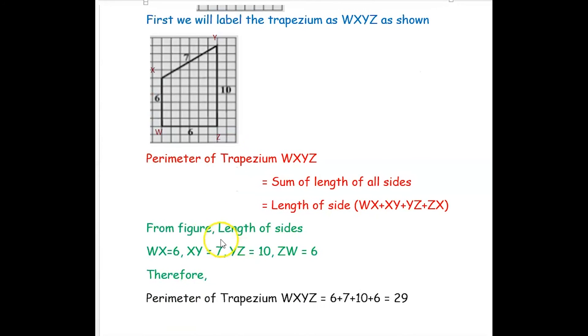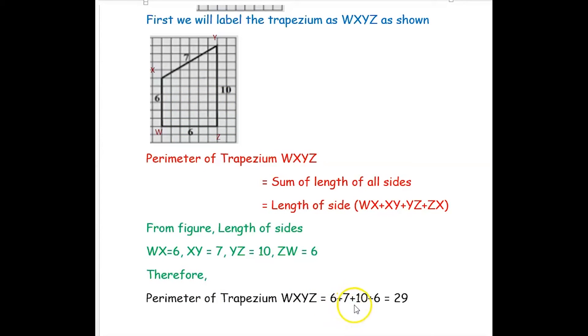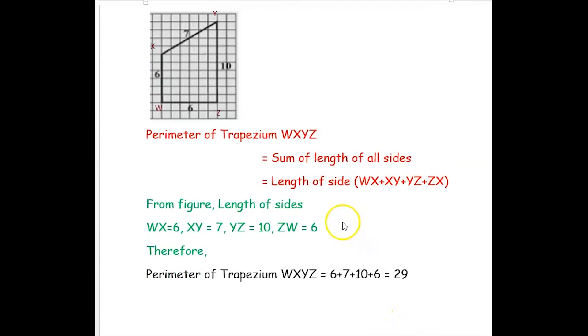Adding all the side lengths to find the perimeter of trapezium WXYZ: 6 plus 7 plus 10 plus 6. Adding all these gives a perimeter of 29.